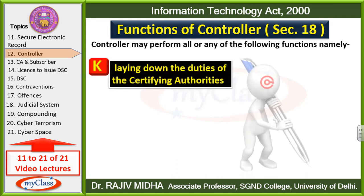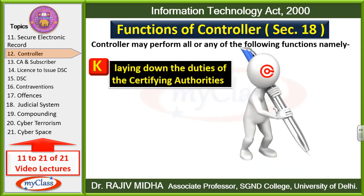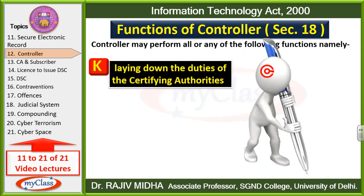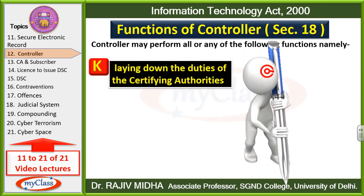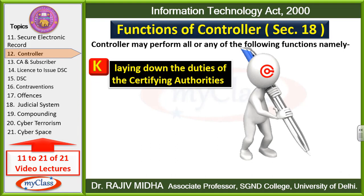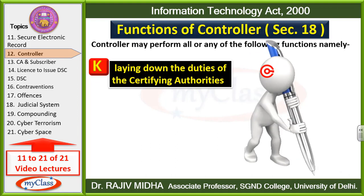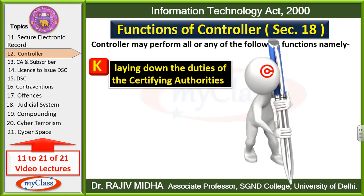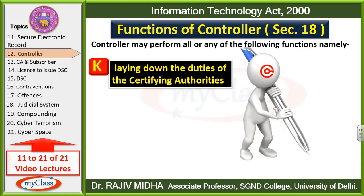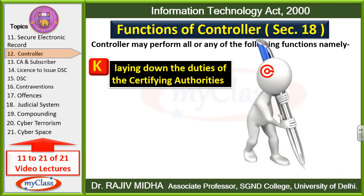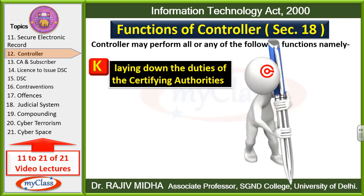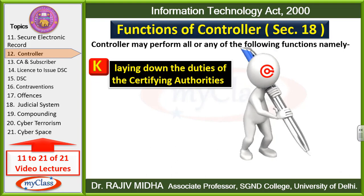K point: Laying down the duties of certifying authorities. Certifying authorities ko kya-kya kaam karne hain aur kis tarah se yeh kaam karne hain — iske liye saari duties jo certifying authorities ko di jaayengi, woh duties bhi controller hi determine karega.